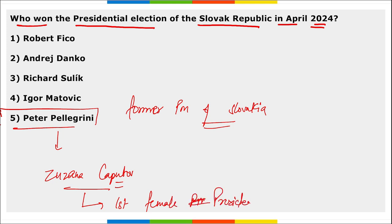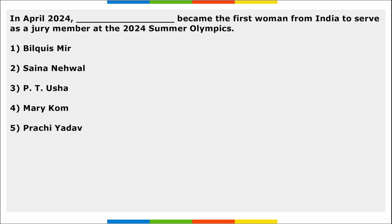Peter Pellegrini will succeed Zuzana Čaputová, who became the first female President of Slovakia. Next: in April, who became the first woman from India to serve as a jury member at the 2024 Olympic Summer Games to be held in Paris? Take a note of this important question about the first woman from India to serve as a jury member at the 2024 Olympic Games.